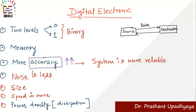So the advantages of digital electronics are: memory, accuracy, reliability, low noise, compact size and portability, high speed, and less power dissipation. These are the advantages you get when using digital electronics compared to electrical appliances. However, we cannot say we can do everything with digital electronics — at some point, electrical energy will still come into the picture.